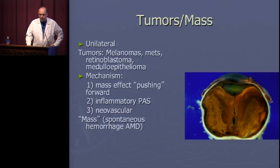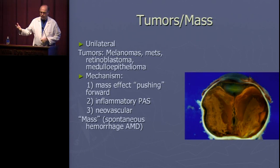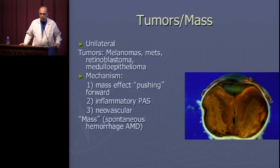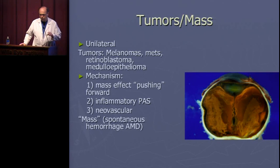If someone presents with marked pressure elevation and a shallow anterior chamber while the other eye has an open angle, always think about things posteriorly pushing forward: tumors such as melanomas, metastases, retinoblastoma, and medulloepithelioma. Cases have been reported in children where tube shunts were placed for missed medulloepithelioma, causing orbital seeding. You must rule out posterior segment pathology — especially tumors — as a cause of anterior displacement before proceeding with surgery.